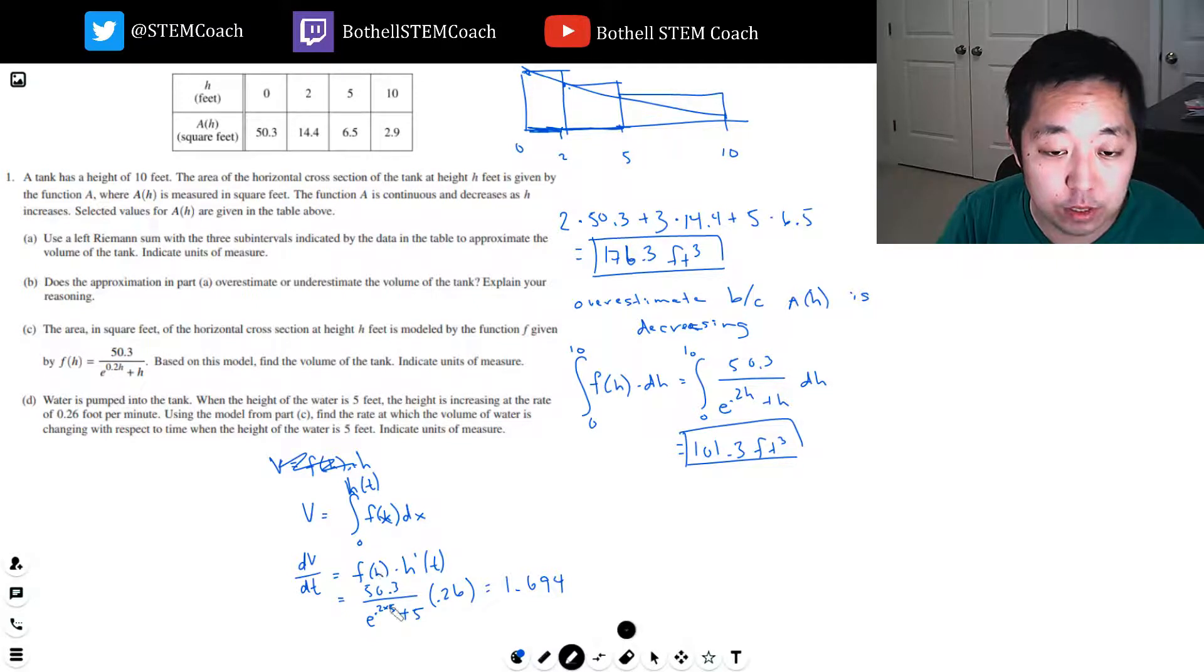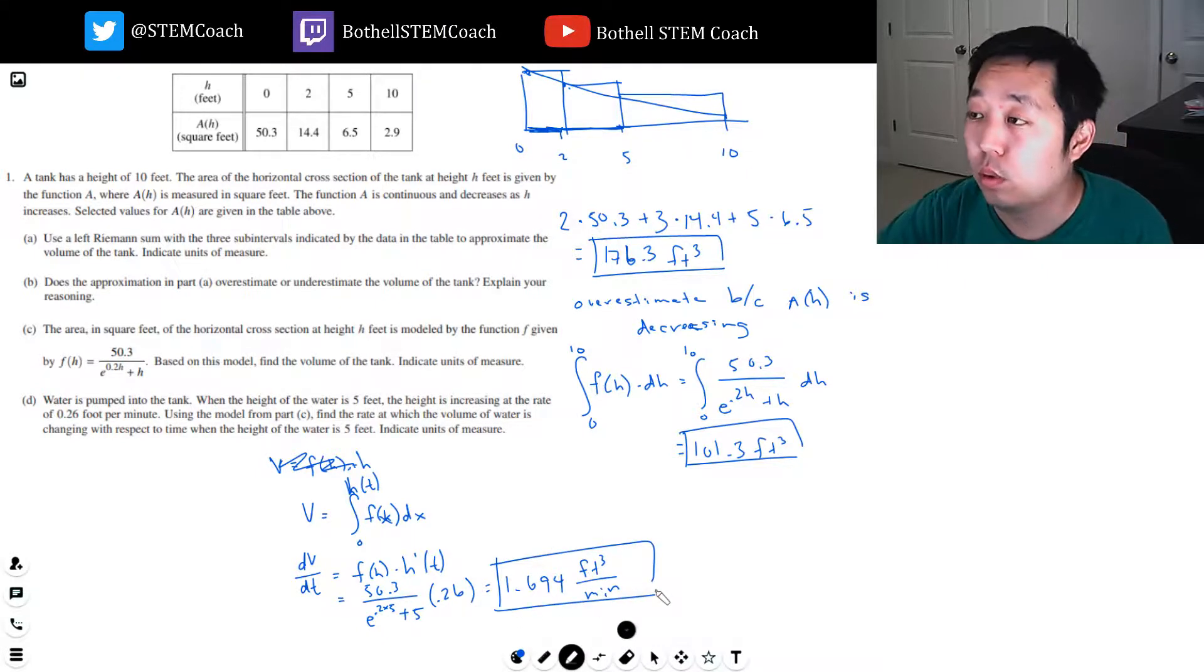F of H should have been area. So that's feet squared. So this is feet squared. And this is feet per minute. So it's cubic feet per minute.